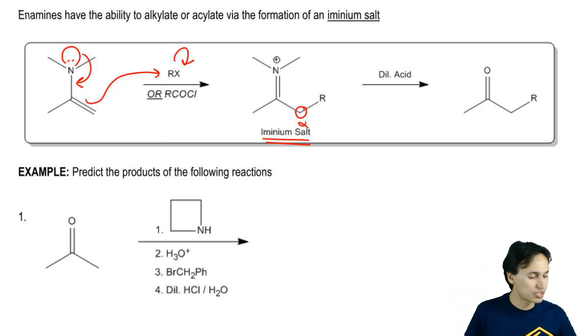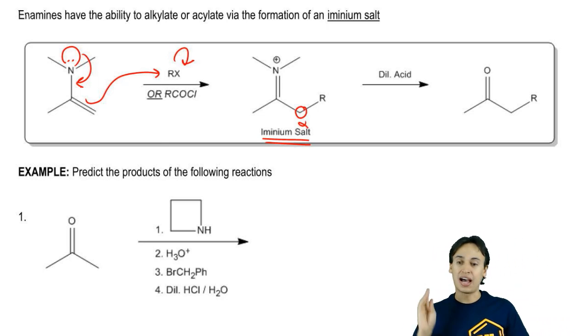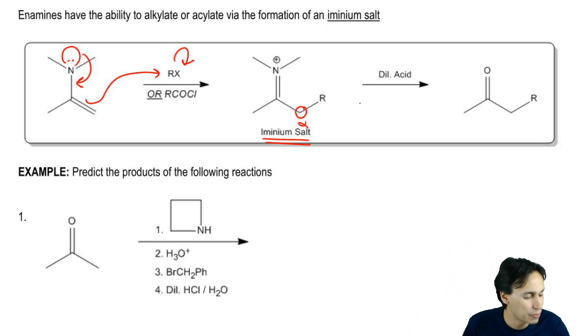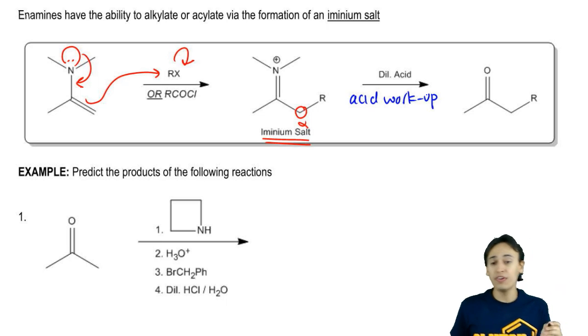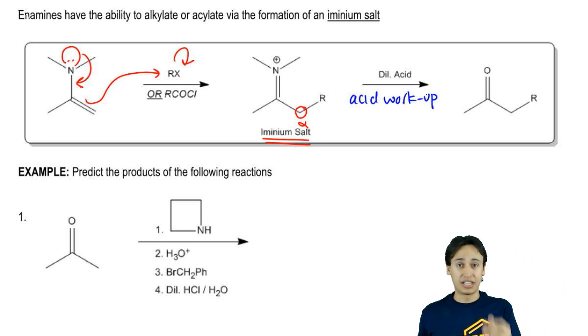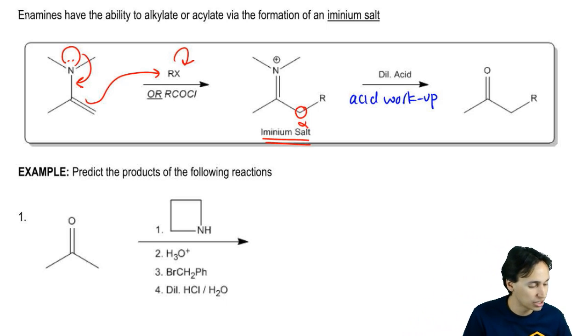Then we can use dilute acid to hydrolyze the iminium salt all the way to a ketone. If you're wondering how that happens, this happens through what we call an acid workup. This is a very important reaction in organic chemistry too. We need to know how to hydrolyze nitrogen compounds into oxygen-containing compounds. This is a multiple-step reaction but if you're interested in looking it up...